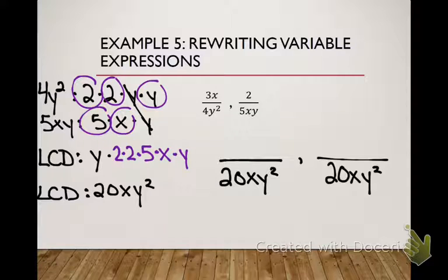How did I get from 4Y squared to 20XY squared? What's missing? Okay. Well, 4 times what is 20? 5. And what else is down here? I have an X out of nowhere, so I've got to multiply by an X.